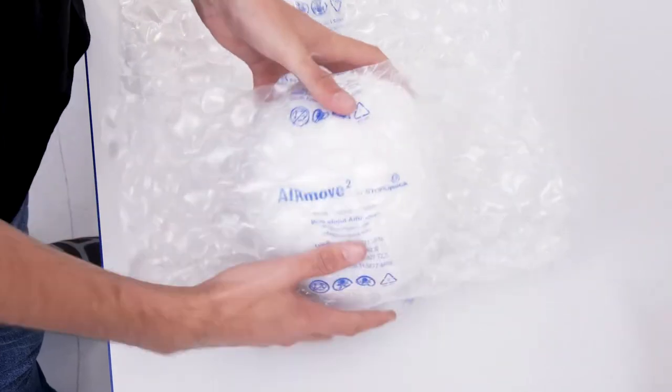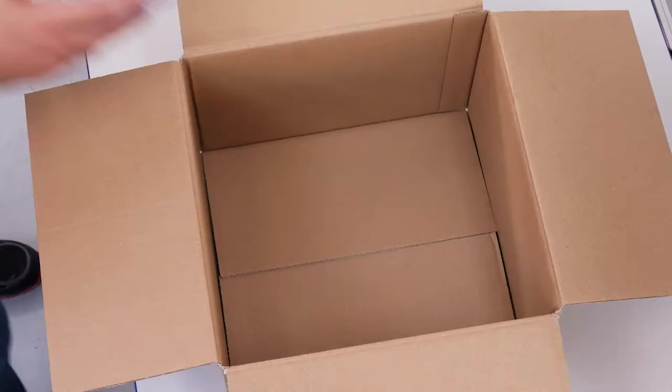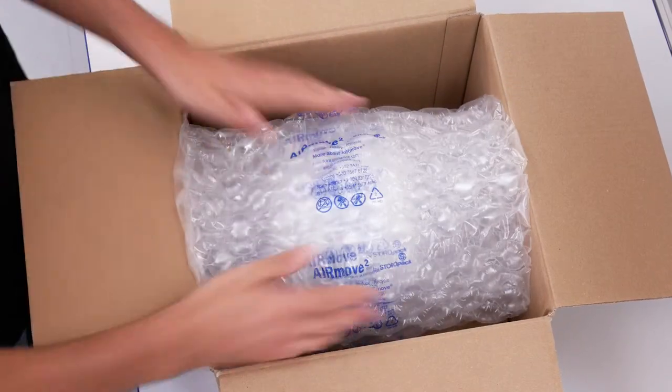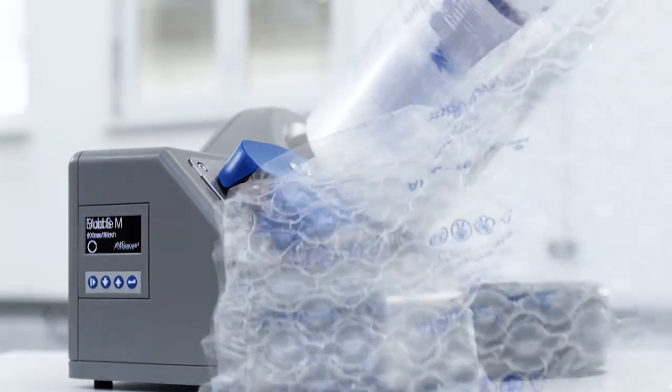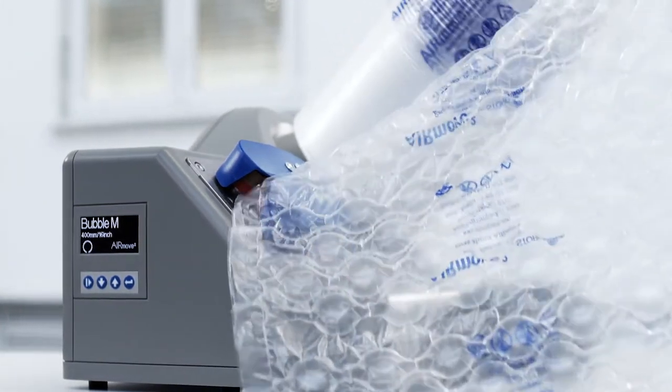AirMove 2 is easy to handle, so you can set it up effortlessly at any packing station. It's ready to use instantly and makes the cushions right where you need them. This compact air cushion system saves tons of space, so you have more room for packing.